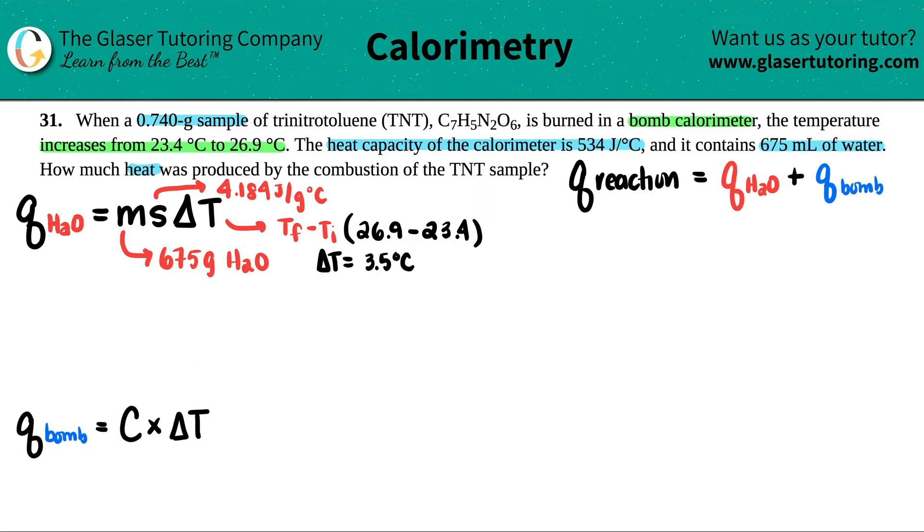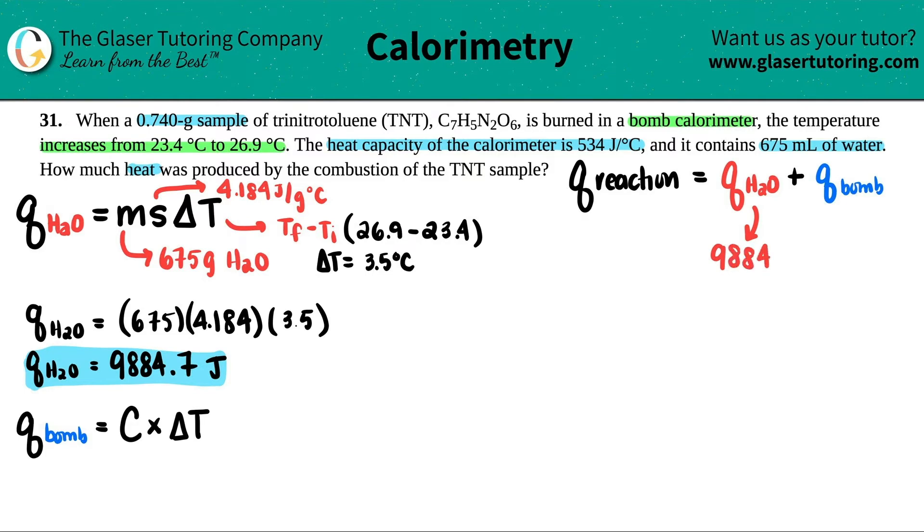All right, let's find out the heat just from the water. So Q of the H2O would be 675 times 4.184 times 3.5. When I do my calculations, I don't put in units because I already checked that I have the right units beforehand. So it kind of makes it a little easier. So the heat produced just coming from the water 675 times 4.184 times 3.5, I get 9,884.7. Now I'm not going to round because that's not the answer that I'm looking for in full. This is just the heat of the water. So as of right now, I'm just going to say this was 9,884.7 joules.